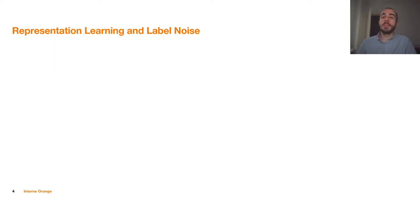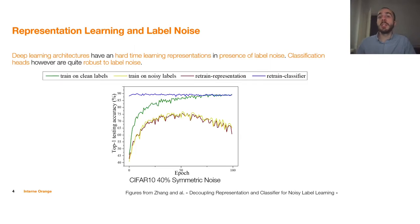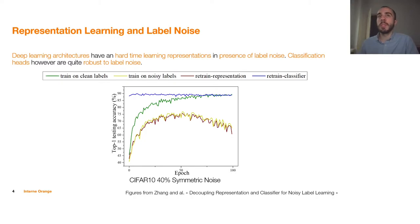What about representation learning and label noise? It's a huge topic because deep learning architectures have enough capacity to learn representations in the presence of label noise. However, classification heads and classification algorithms overall are quite sensitive to label noise. This has been shown empirically, especially in the paper called Decoupling Representation and Classifier for Noisy Label Learning. What they did is train a deep learning architecture on CIFAR-10 with some noise and report the accuracy of the architecture. They first trained on clean data, reporting the green curve, which behaves quite well.